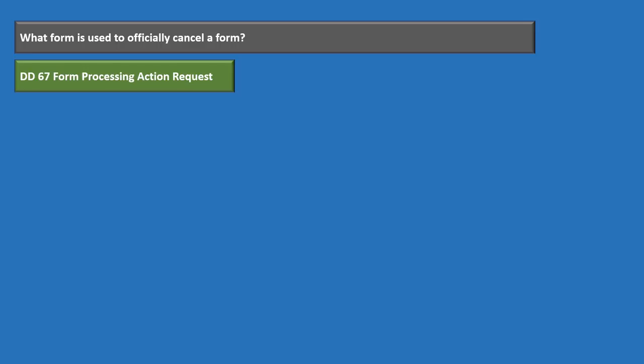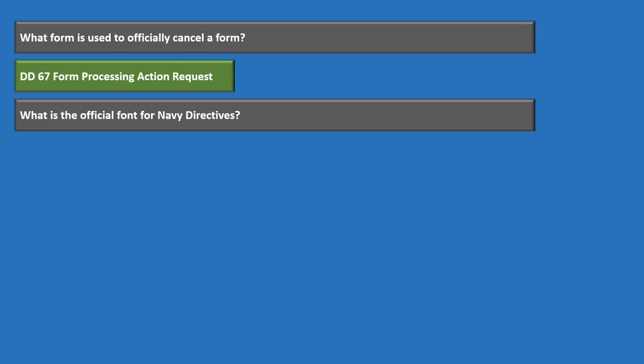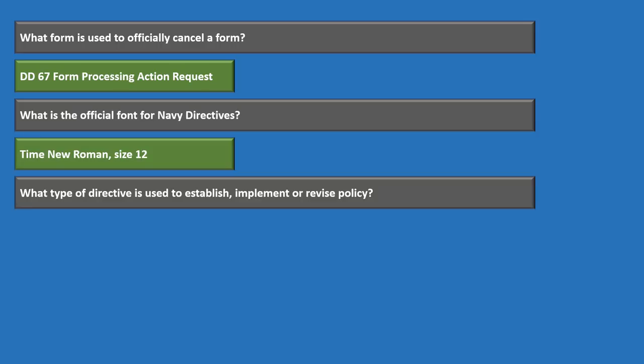The form used to officially cancel a form is the DD-67, the Form Processing Action Request. The official font for Navy directives is Times New Roman, size 12.